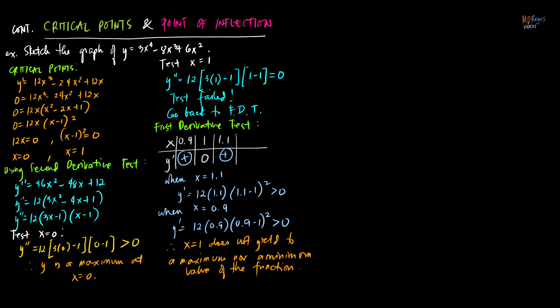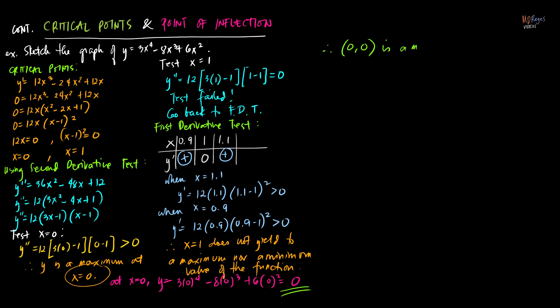At x equals 0, y is a maximum. We need to find the maximum point. From the original function, when x equals 0: y equals 3(0)⁴ minus 8(0)³ plus 6(0)², so y equals 0 also. Therefore the point (0, 0) is a maximum point. We don't have a minimum point, just a maximum point.